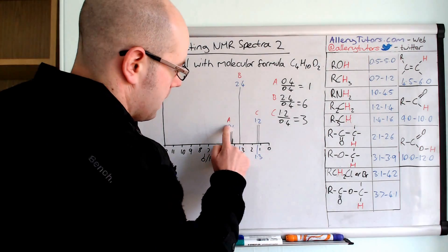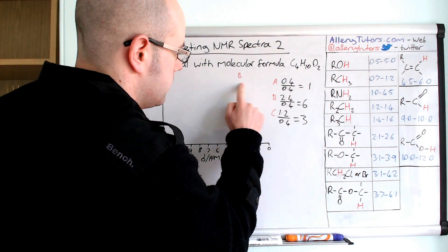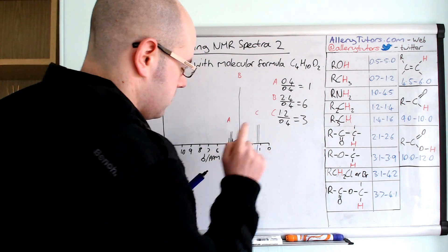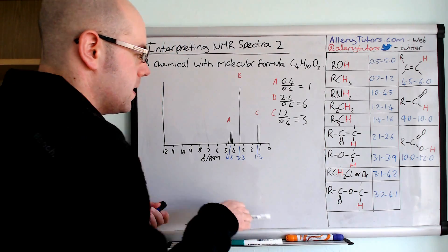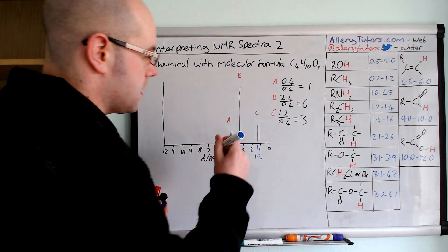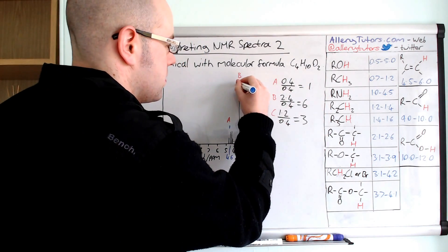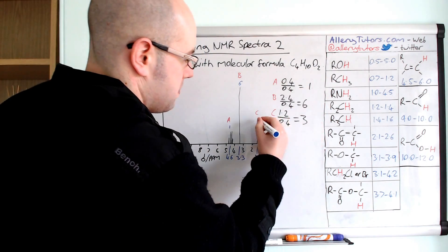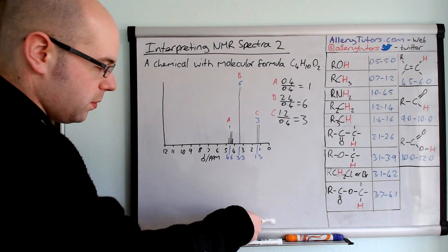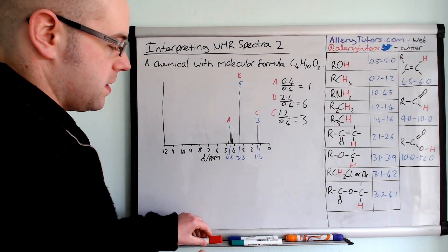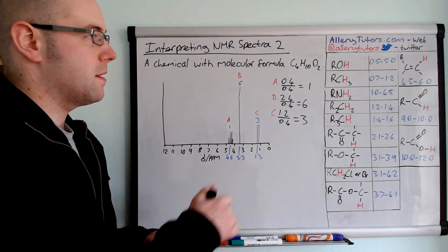So we can change these numbers to have clearer integration values: peak A has an integration of 1, peak B has an integration of 6, and peak C has an integration of 3. Now we've done that, we're going to try and identify what this molecule is.